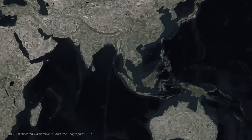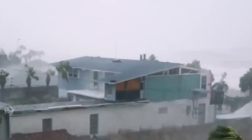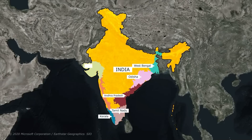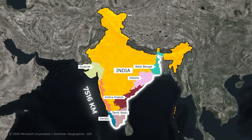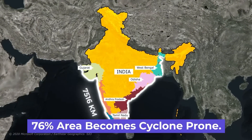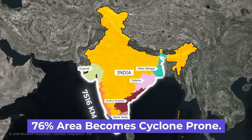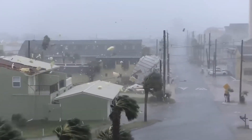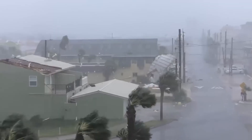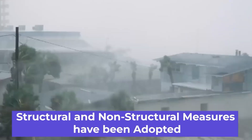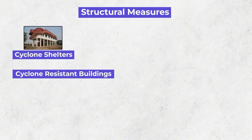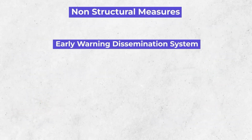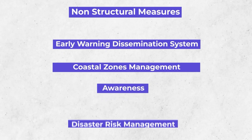Cyclone management in India is very important. India has about 7,516 km of coastline. On the eastern side are West Bengal, Odisha, Andhra Pradesh, and Tamil Nadu, while on the western coast the states range from Kerala to Gujarat. 76% of the 7,516 km of coastline is considered cyclone-prone, which geographers call the Indian Cyclone Corridor. To reduce cyclone damage, there are both structural and non-structural measures. Structural measures include cyclone shelters, cyclone-resistant buildings, canals, drains, and power lines of communication. Non-structural measures include early warning systems, cyclone management and awareness, and disaster risk management.